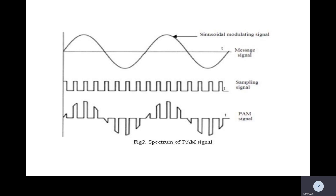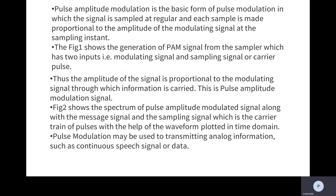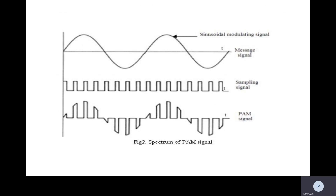Pulse amplitude modulation is the basic form of pulse modulation in which the signal is sampled regularly and each sample is made proportional to the amplitude of the modulating signal at the sampling instant. Figure one shows the generation of a PAM signal from the sampler, which has two inputs: the modulating signal and the sampling signal (carrier pulse). Figure two shows the waveforms in the time domain — the first represents the message signal, the second the sampling signal, and by multiplying those two we get the PAM signal.